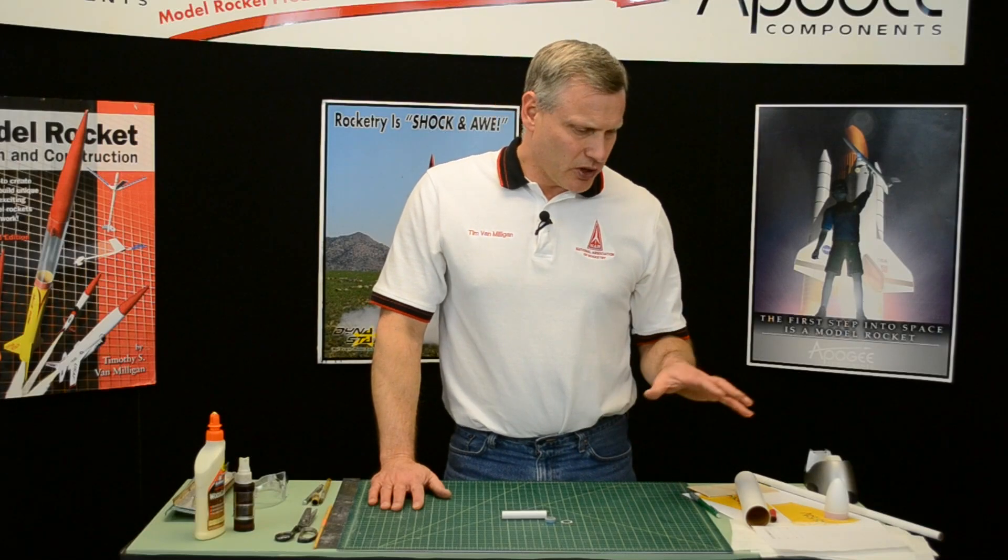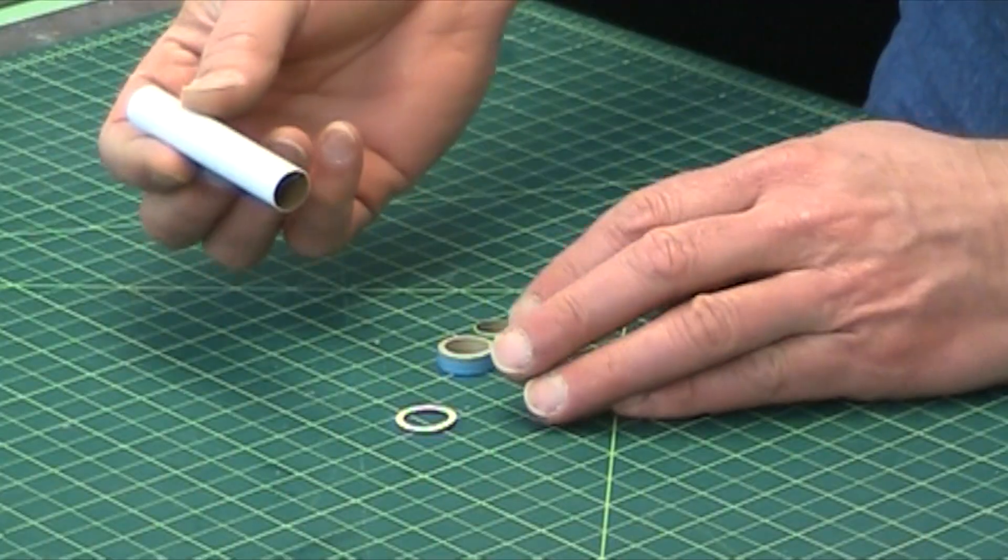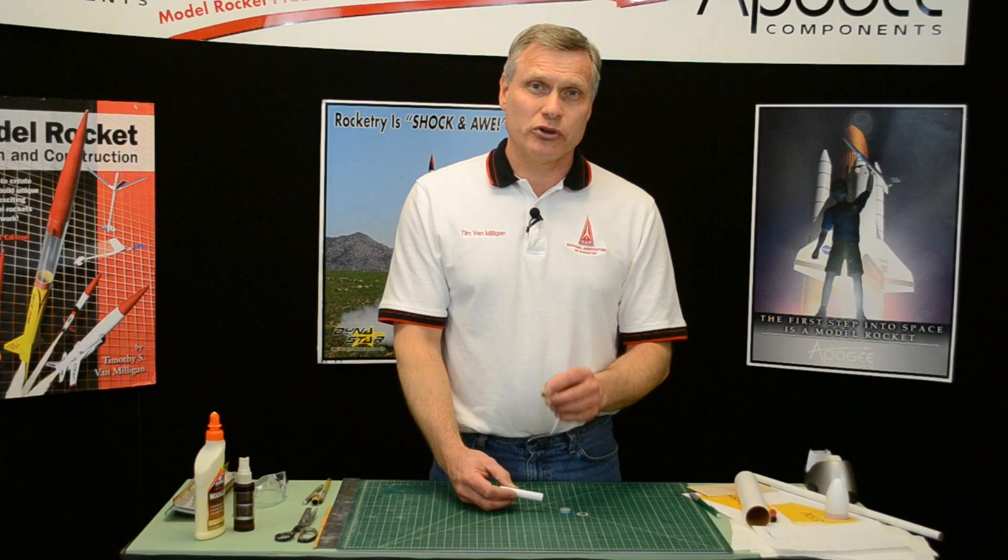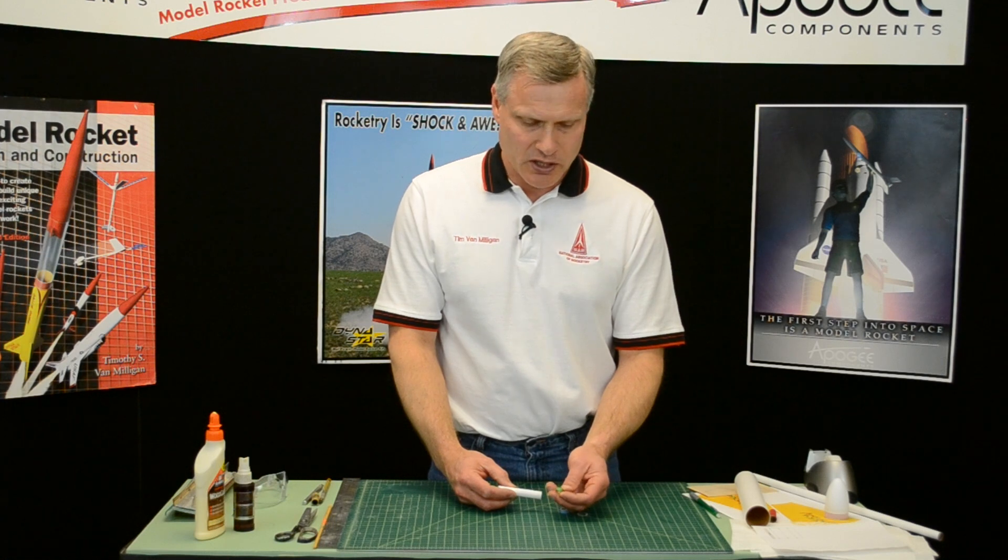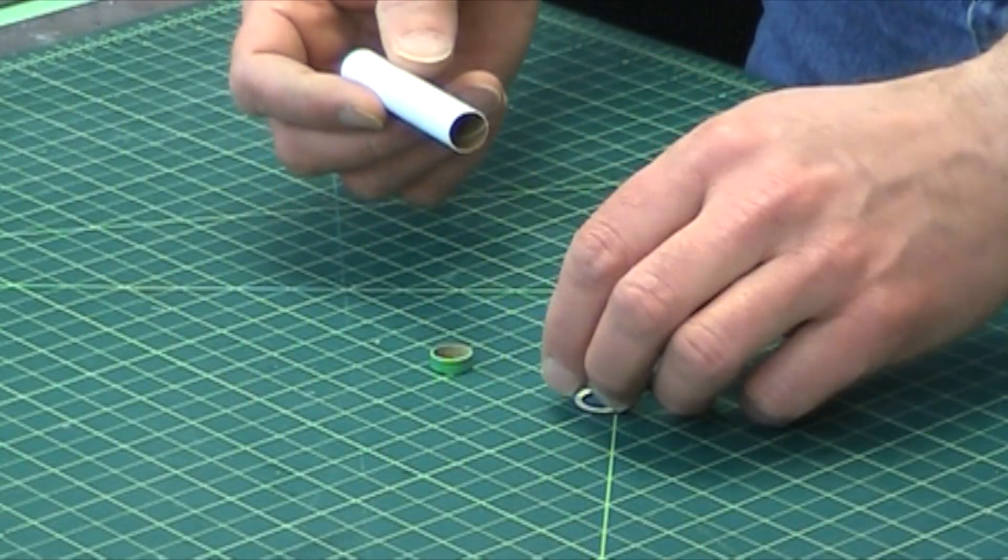We're going to start building the rocket by building the engine mount. You're going to need the short tube, the engine block, and you can install the engine block or you can leave it out if you want to save the weight. I'm going to show you how to install it, and then we're going to put on the centering rings.